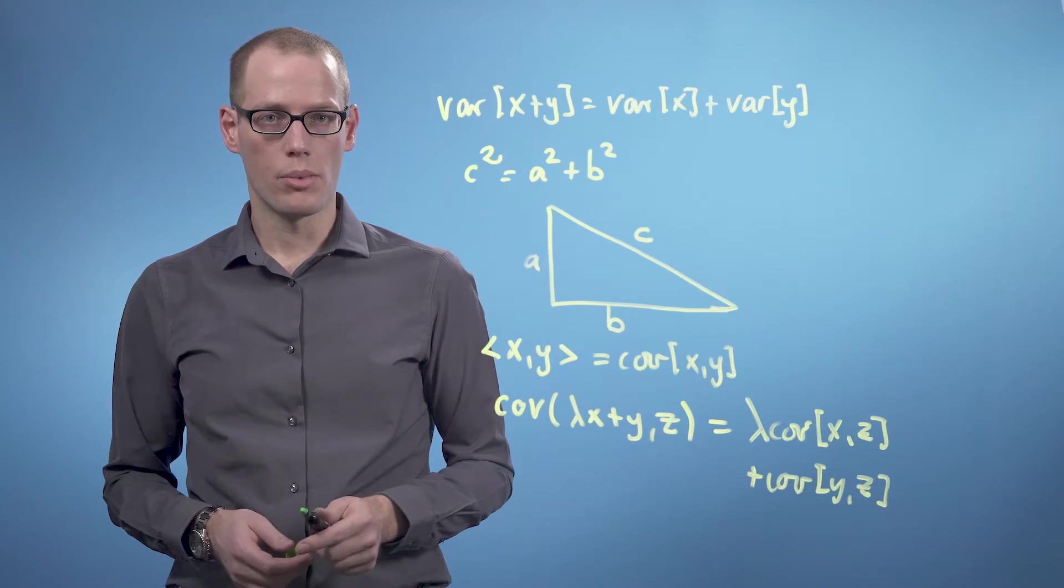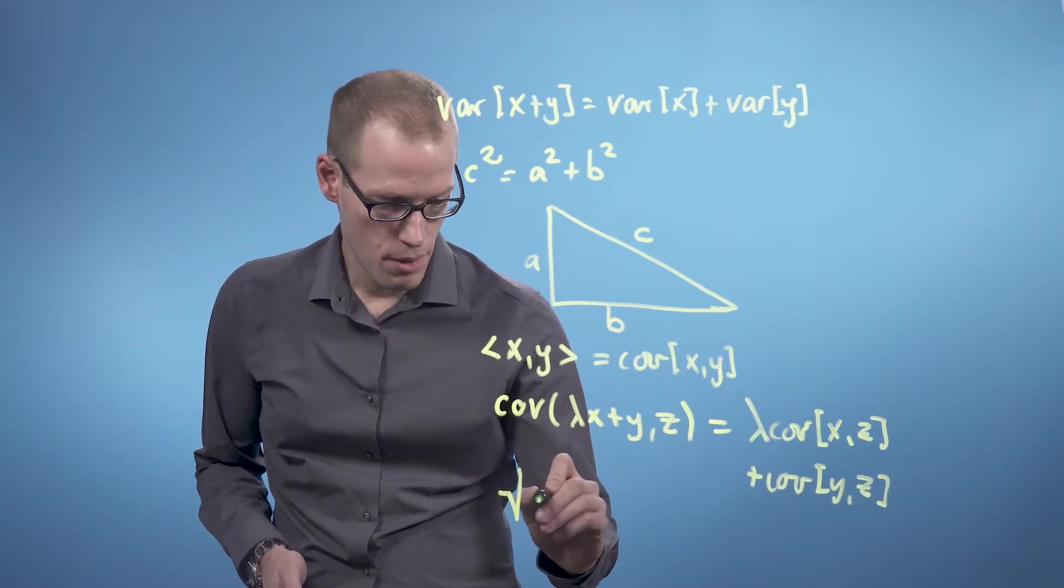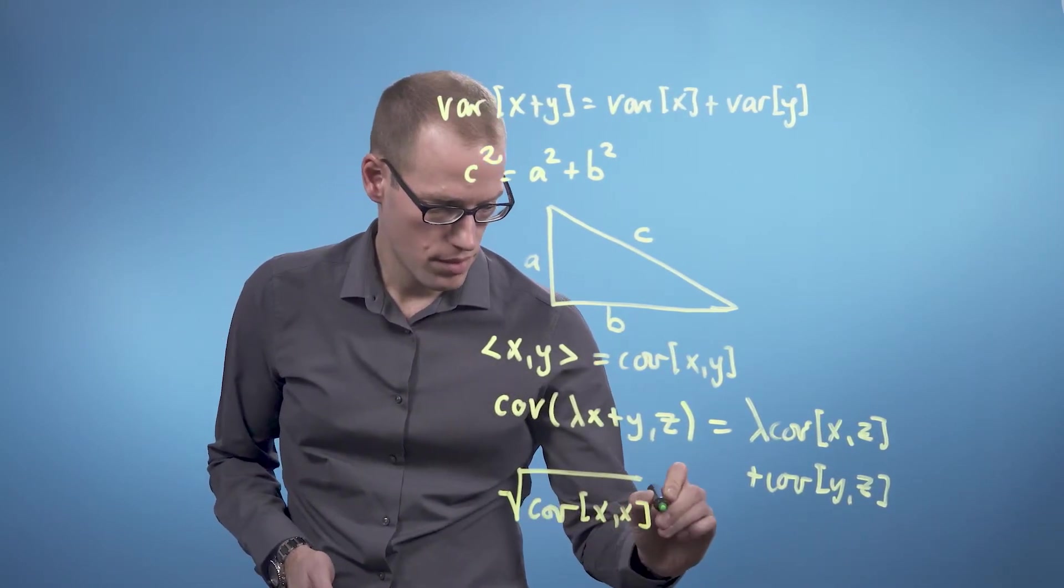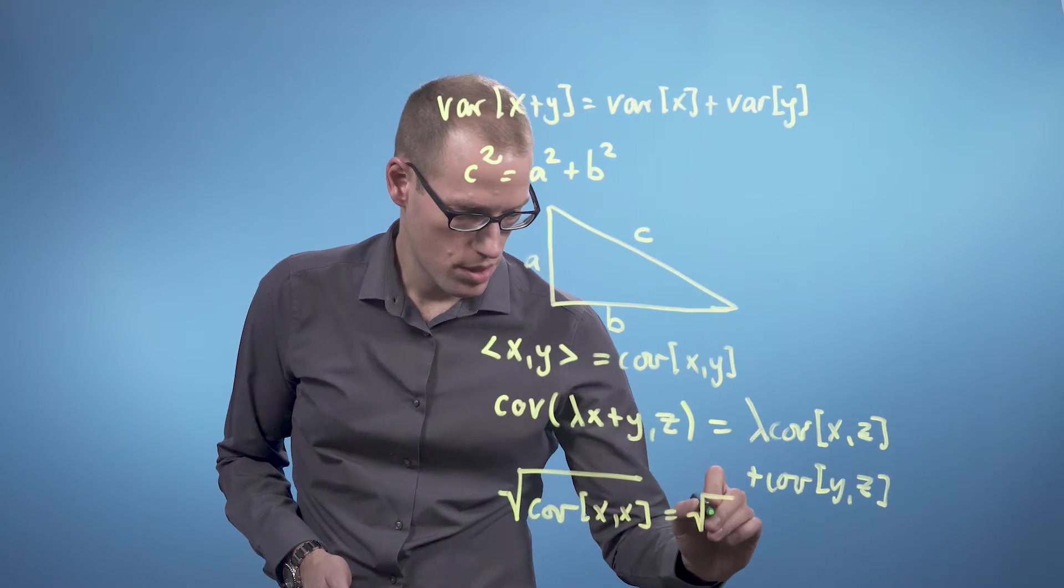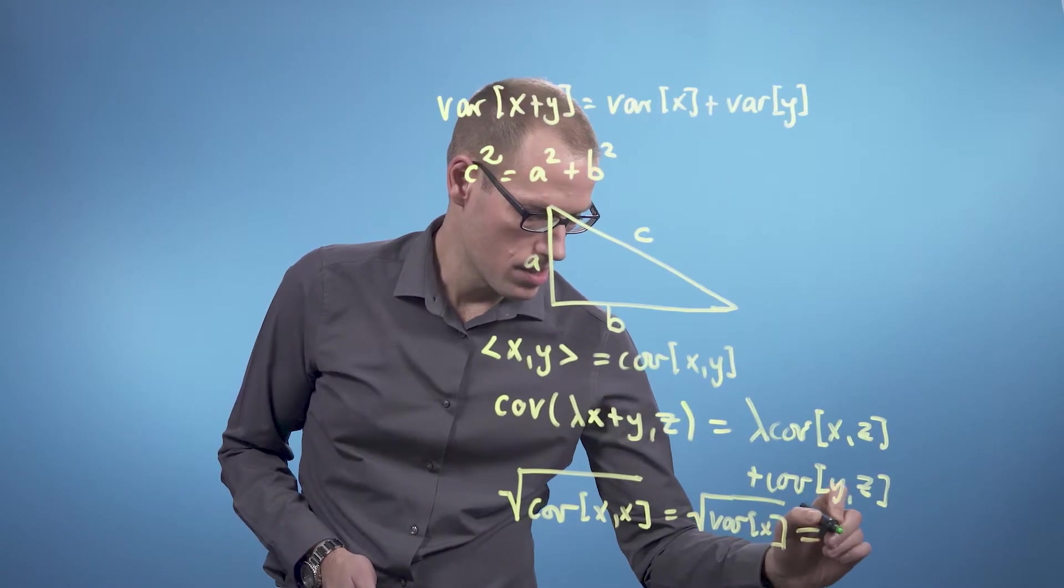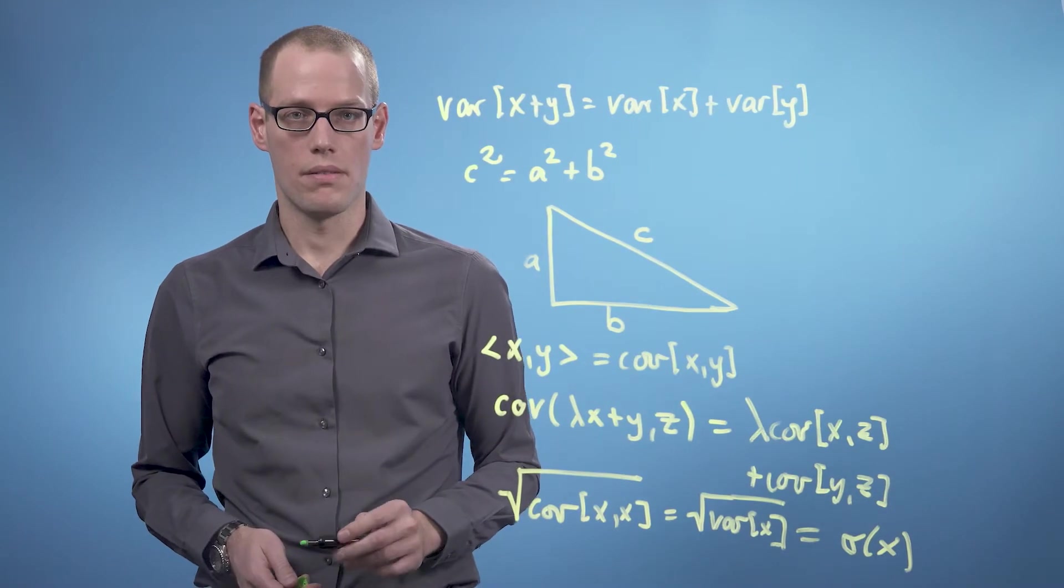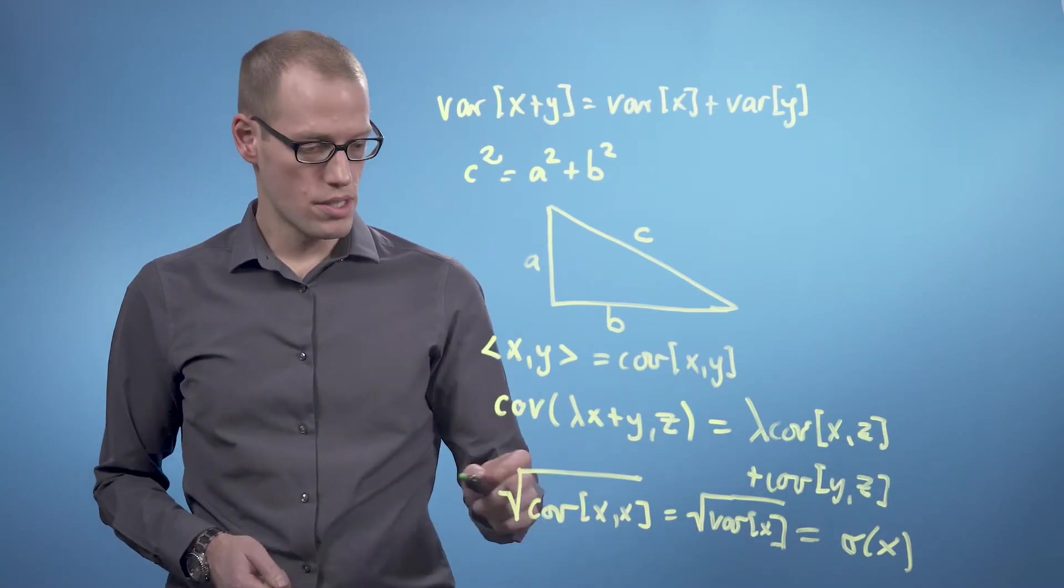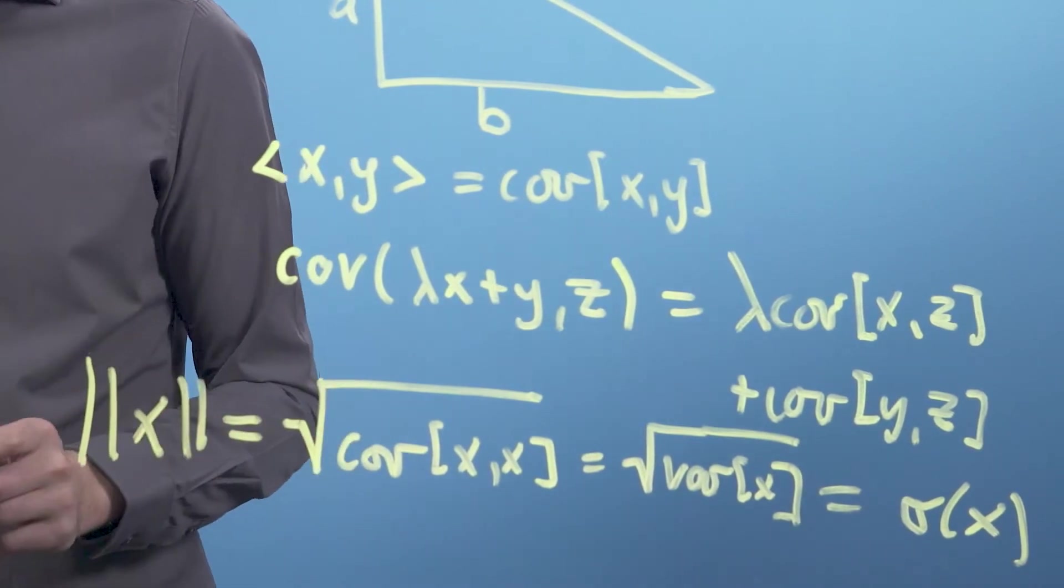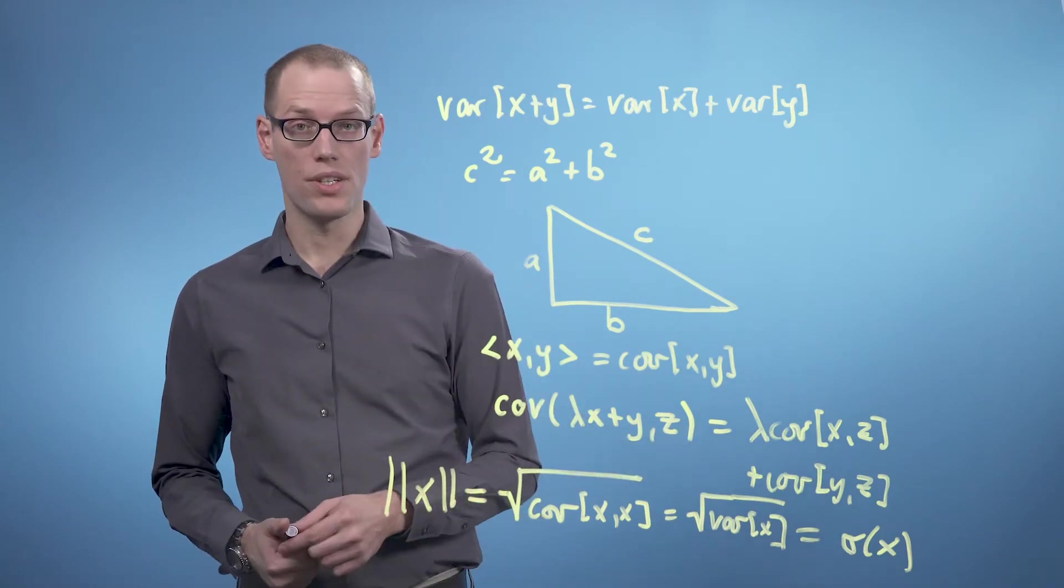And if the length of a random variable is the square root of the covariance of x with itself, which is the square root of the variance of x, then this is the standard deviation of the random variable x. Therefore, the zero vector is a vector that has no uncertainty, that means standard deviation is zero.